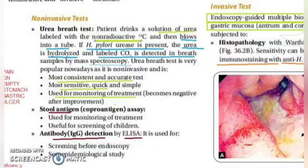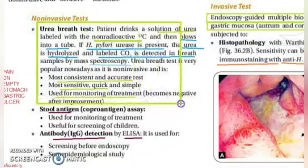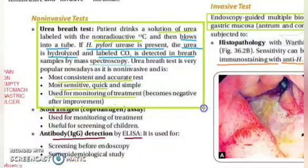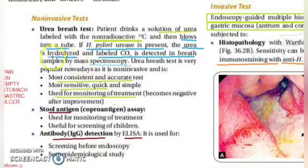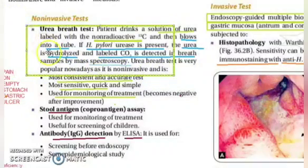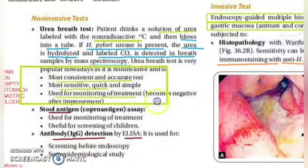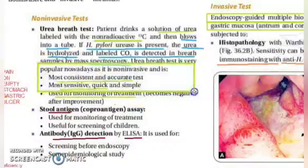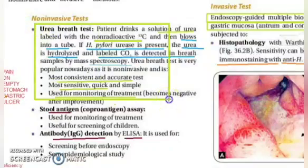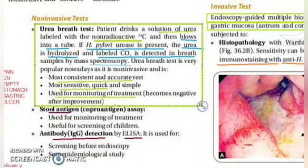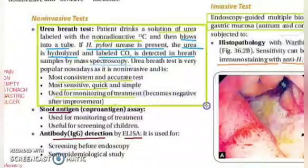The person drinks the solution and if H. pylori is present in the stomach, it will have urease enzyme, which will hydrolyze the urea and labeled carbon dioxide will be detected in the breath by spectroscopy. This test is very popular nowadays — it is most consistent, accurate, sensitive, quick, and simple. It is also used for monitoring treatment; after treatment, the result should become negative if all bacteria are gone.